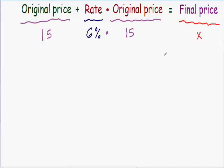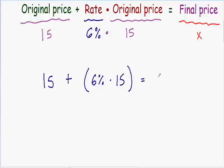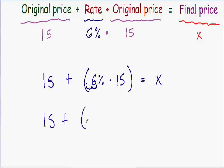Rewriting the equation cleanly: we have our original price, 15, plus our percentage rate of 6% multiplied by 15, is equal to our final price x. Any time you're solving an equation with a percent, you should change it into a decimal. To change from a percent to a decimal, you need to move the decimal point two units to the left. So 6% written as a decimal is 0.06, and this is still being multiplied by 15, equal to x.